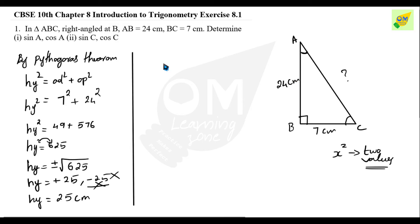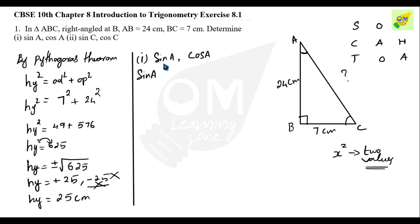Now let's go to the subdivisions. For sin A and cos A, we use SOH-CAH-TOA: sin theta is equal to opposite divided by hypotenuse, cos theta is equal to adjacent divided by hypotenuse, and tan theta is equal to opposite divided by adjacent.